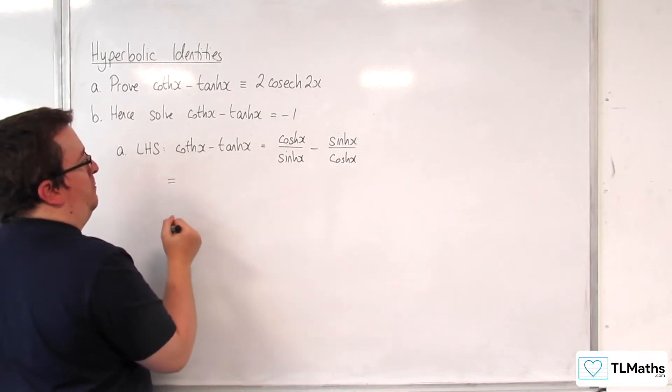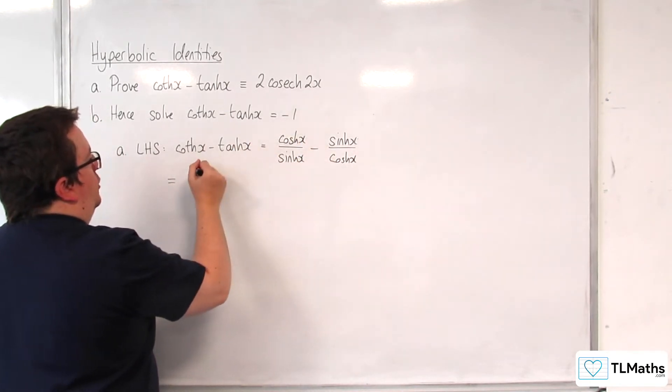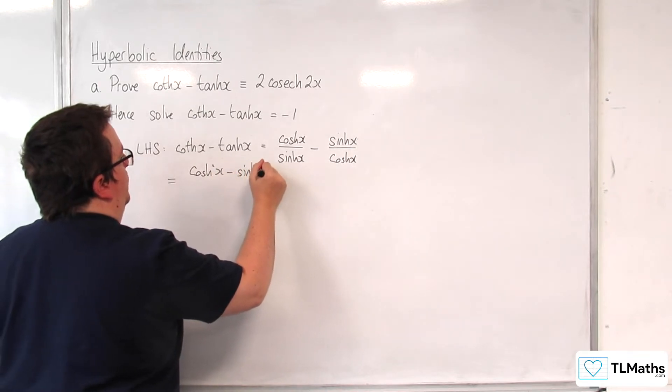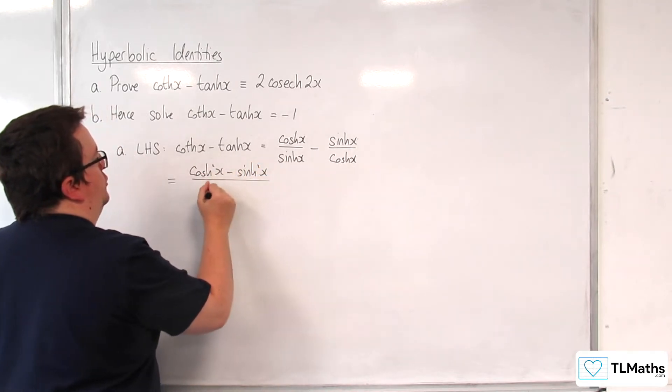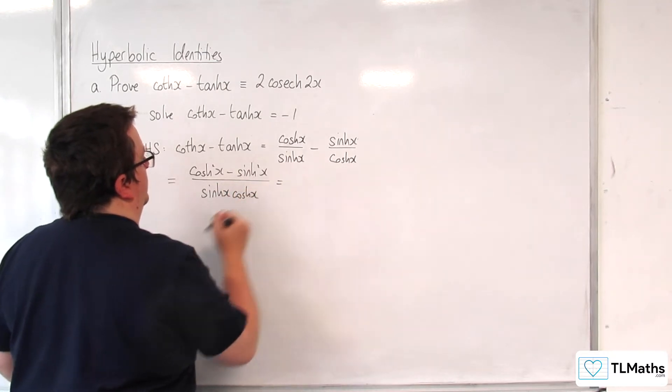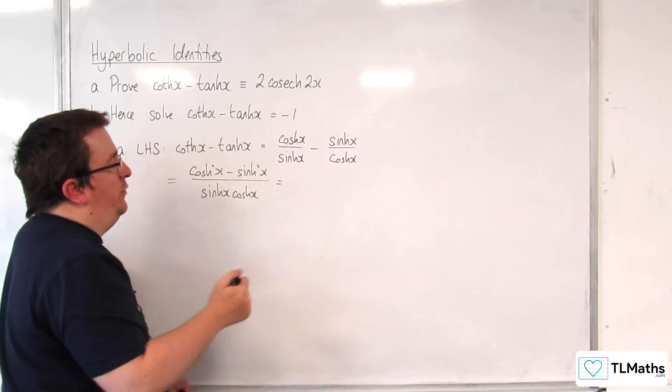So we're going to cross multiply those. So we get cosh squared x take away sinh squared x over sinh x cosh x. Now cosh squared take away sinh squared is 1.